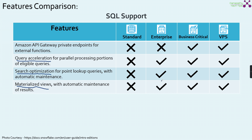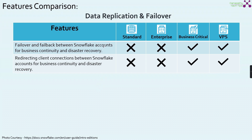Most of the critical features of Snowflake fall under the Enterprise category, and most of the security-related things fall under Business Critical. VPS is very unique. These things are very important from the exam point of view. Moving on to data replication and failover — failover and fallback between Snowflake accounts is available only on the Business Critical version. Please make a note of it. Additionally, redirecting client connections between Snowflake accounts and business continuity for disaster recovery is also available only on the Business Critical version of Snowflake.